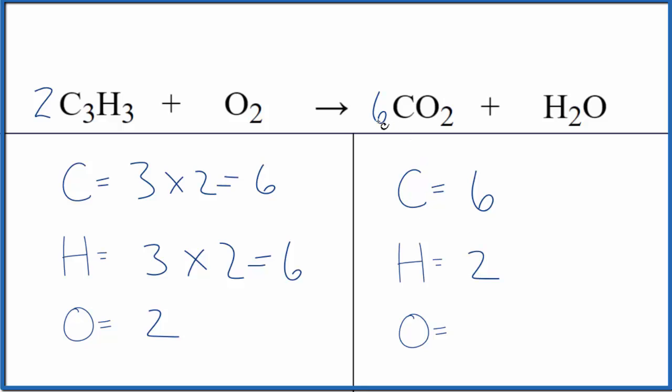That does mean I need to change the three right here now. So to get six carbons, I need to make this a six. One times six, that gives me six carbons. And then oxygens, this is six times two, that's 12, plus the one in the water here, 13.